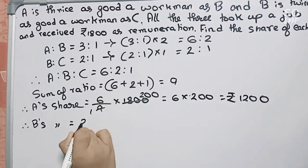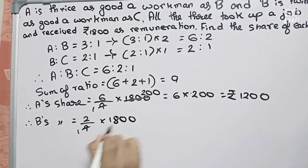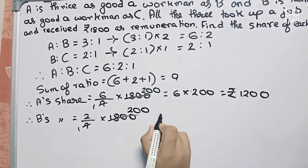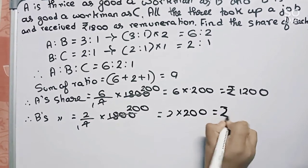B's share equals to 2/9 into 1800, which will become 2 into 200, which is 400.